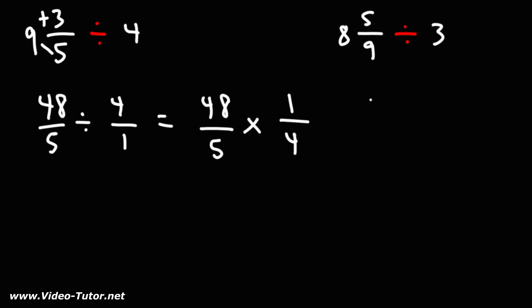Now before we multiply across, we want to see if we can cancel anything. 48 is 12 times 4. And 4, we can write that as 4 times 1. So we can cancel the 4.